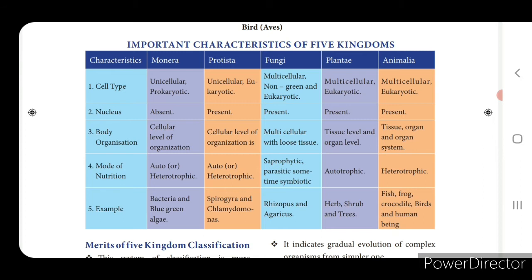Mode of nutrition - autotrophic means it can produce its own food; heterotrophic means depending on other organisms. Monera is either autotrophic or heterotrophic; Protista also autotrophic or heterotrophic; Fungi is saprophytic or parasitic; Plantae is autotrophic; Animalia is heterotrophic. Examples: Monera - bacteria and blue-green algae; Protista - Spirogyra and Chlamydomonas; Fungi - Rhizopus and Agaricus; Plantae - herbs, shrubs and trees; Animalia - fish, frog, crocodile, birds and human beings.